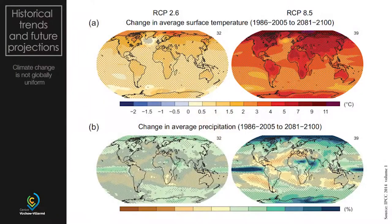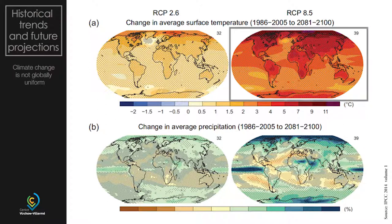Welcome back to the second part of the basics of climate change for people interested in health. What you see here is projections into the future, and at the same time you see the geographical display where the warming occurs most in the upper two graphs, and where rainfall occurs most and where rainfall decreases. Let's look at the first upper graphs and focus on the right one, which is the toughest scenario with the largest warming effect.